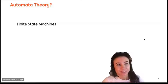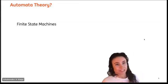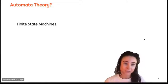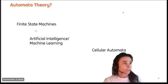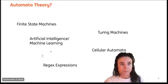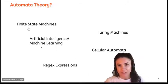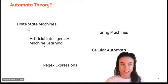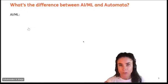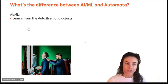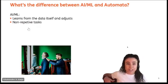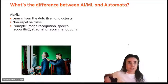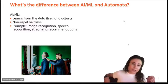Some of you might have studied automata theory in university. Words that might sound familiar and are often mentioned in the same line are finite state machines, cellular automata, artificial intelligence or machine learning, Turing machines, or regex expressions. I want to go a little more in depth about AI and machine learning because they are often intertwined. AI and ML make use of patterns — they learn from the data itself and adjust. That means they include non-repetitive tasks; each task can be different depending on the data being used. Examples are image recognition, speech recognition, or streaming recommendations.